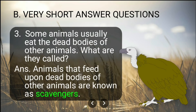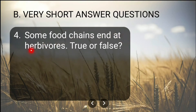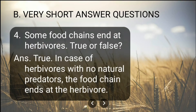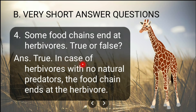Animals that feed upon dead bodies of other animals are known as scavengers — for example, vultures. Fourth question: Some food chains end at herbivores — true or false? The answer is true, because in the case of herbivores with no natural predators, the food chain ends at the herbivore.